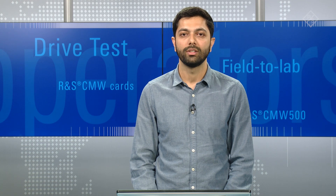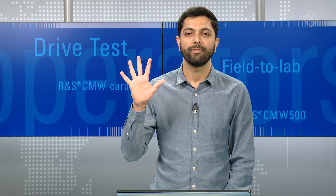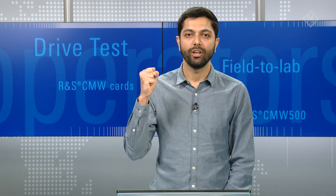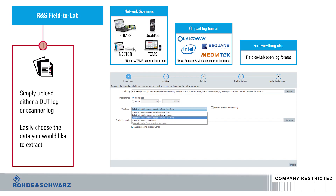Now let's take a brief look at how Field to Lab does its magic. It's really simple. There are five steps, just like five fingers in a hand. Combine all of them and you get a fist — very powerful. The first step is to load the log file into the wizard.